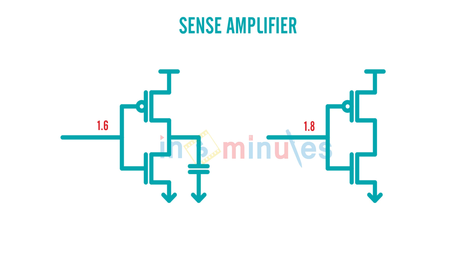A quick question for all of you: when it's 1.6, we understand it's logic value high; when it's 1.8, we understand it's logic value high. So both the NMOS are on, that is very clear. Now which ID—ID of inverter A or ID of inverter B—would be more?